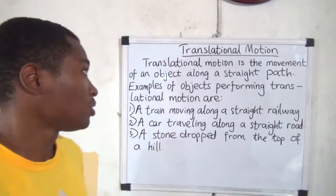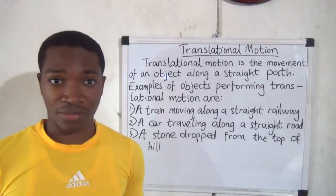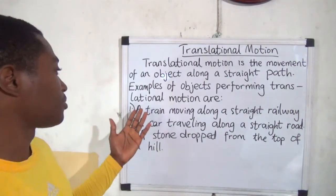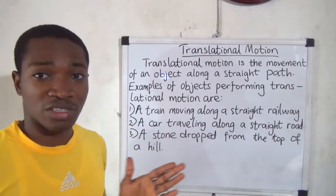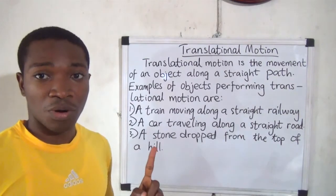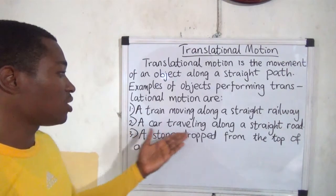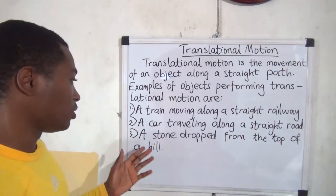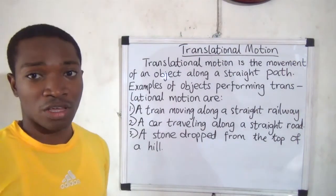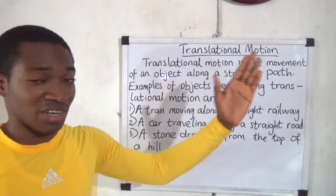Translational motion is the movement of an object along a straight path. Examples of objects performing translational motion are: a train moving along a straight railway line, a car traveling along a straight road, and a stone dropped from the top of a hill. All of these objects move along a perfectly straight line.